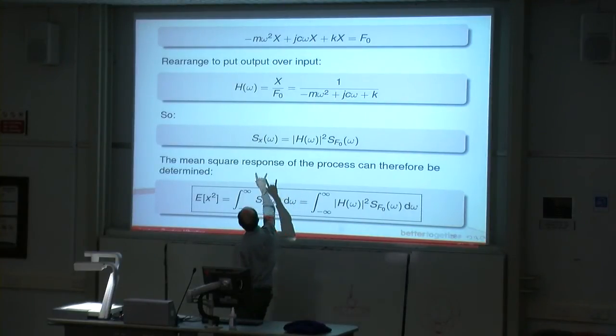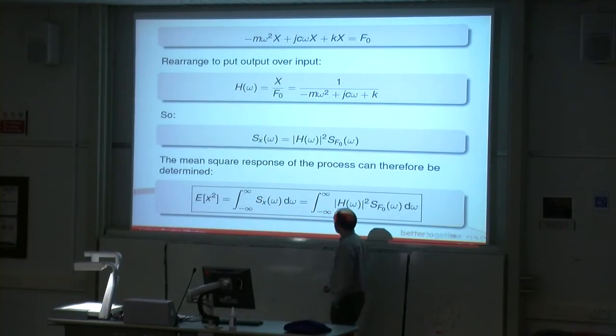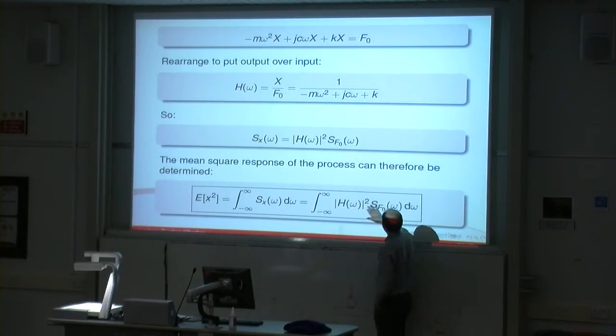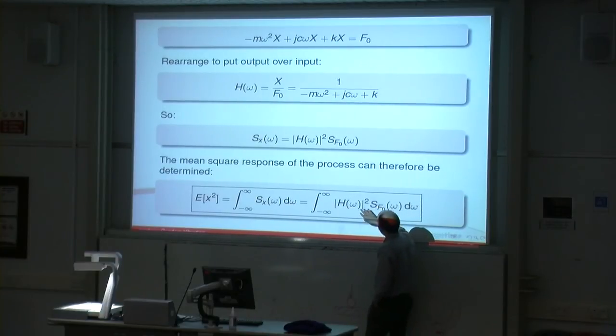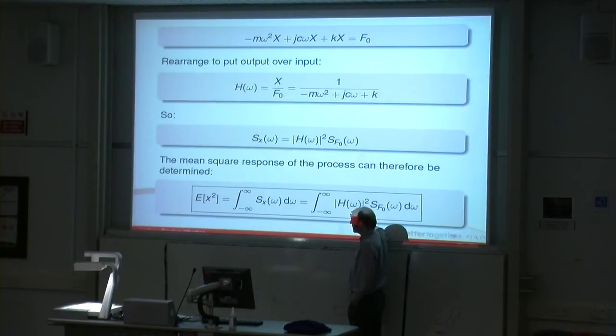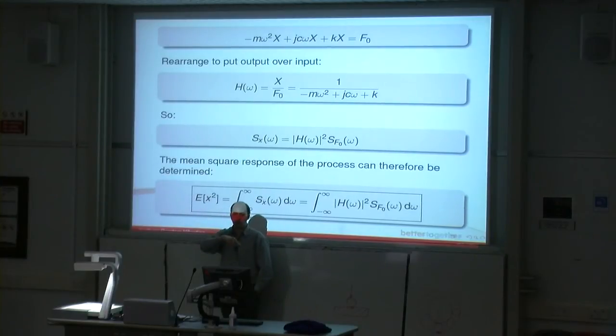You take the integral of this, which gives us E of X squared. The integral of that side is an integral of this side, so you take the same integral of this side. If you can work this out, because you know what this is, that's going to be given to you. You can work out what that is based upon the system that you're analyzing. You integrate it, you're going to get the mean square value. Take the square root of that, you get your RMS. That's the idea behind this problem.